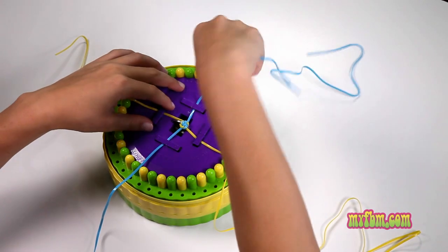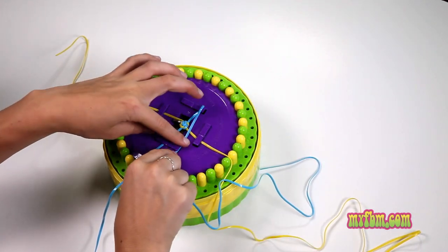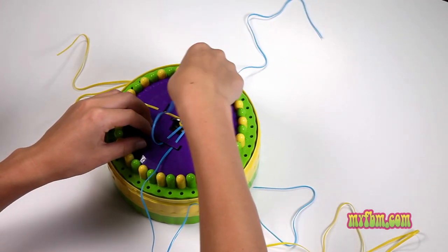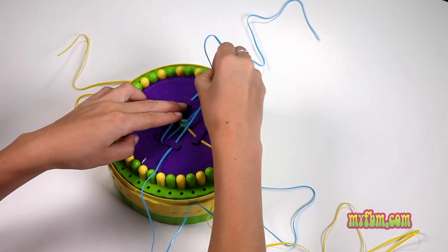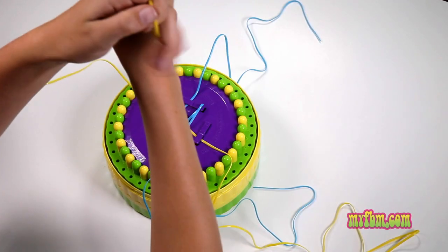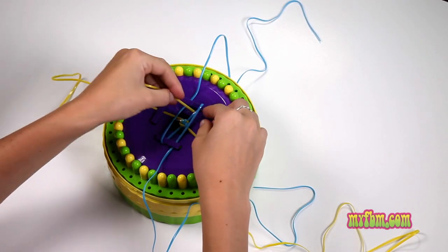To continue, take the number two and fold it over to the number five. Take the number six, fold it over to the number one. Take the number eight, fold it over to the number three, remembering to go under the number two.